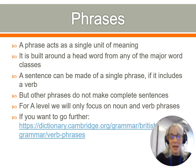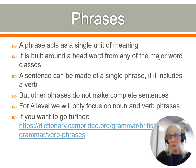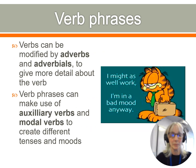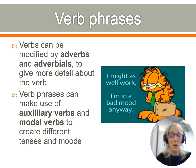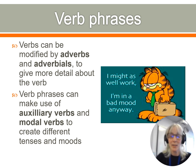For A-level we focus on noun and verb phrases — there's a Cambridge link in the original PowerPoint for further reading. Verbs can be modified by adverbs and adverbials, which give more detail about the verb and how the action is being done. Verb phrases can also make use of auxiliary verbs and modal verbs, and these can create different tenses and what are called grammatical moods — and that's not to do with how you're feeling.